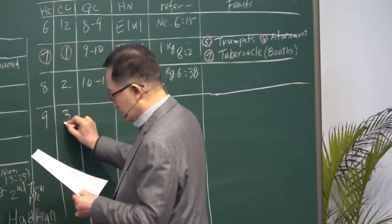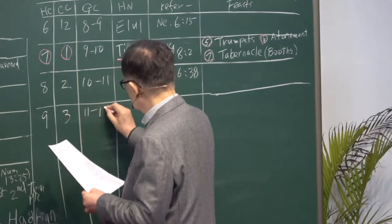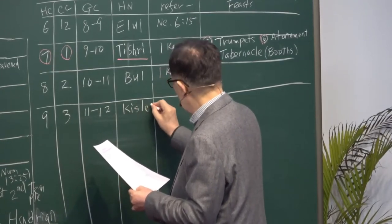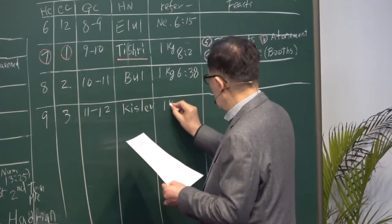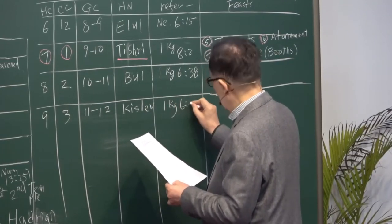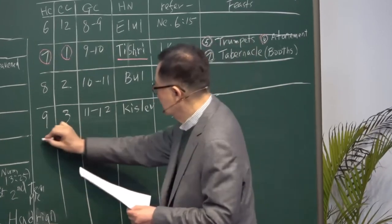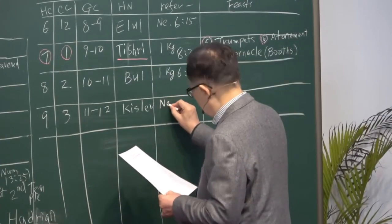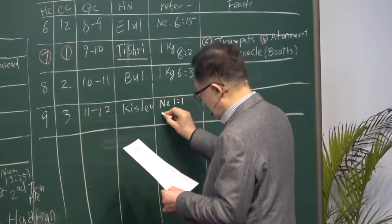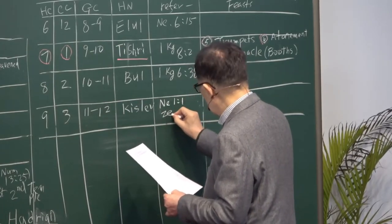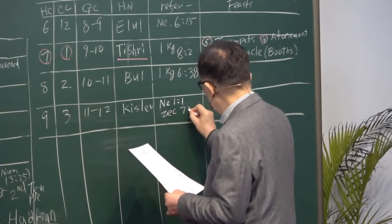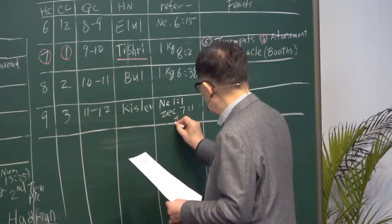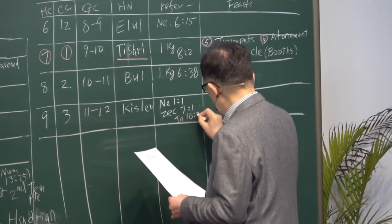Feast of trumpet, and six, the feast of atonement, and seven, the feast of tabernacles, or it calls booth. So we've got here in the month of Tishri.